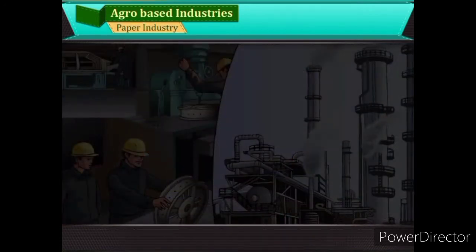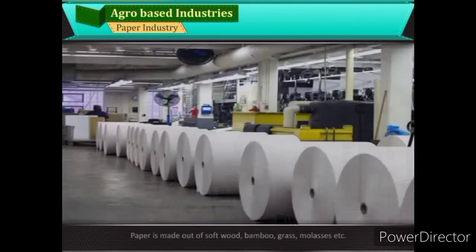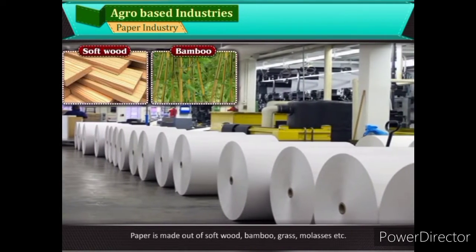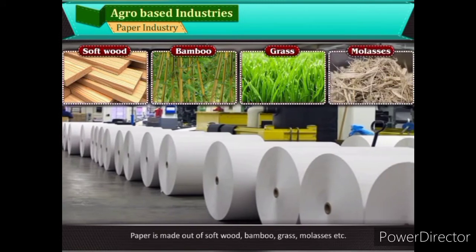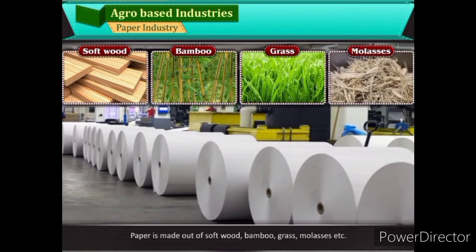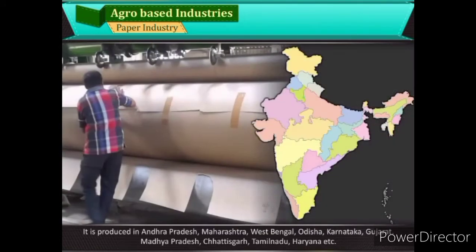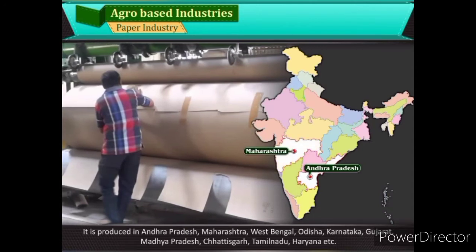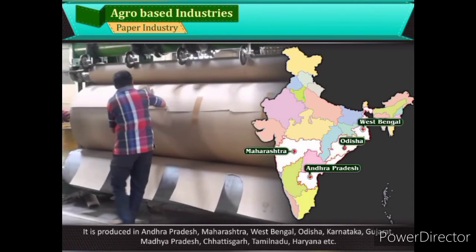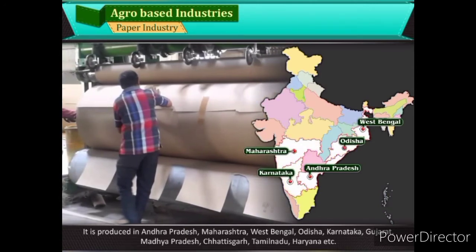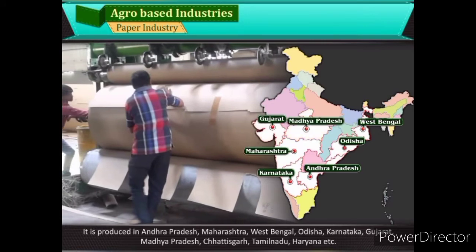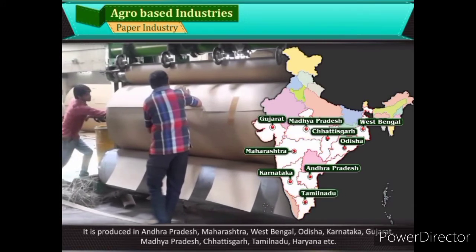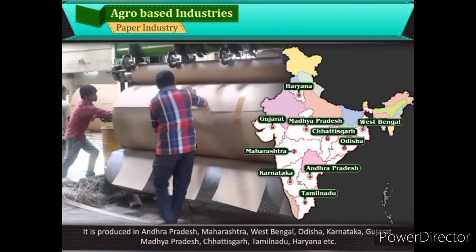Paper Industry: Paper is made out of soft wood, bamboo, grass, molasses, etc. It is produced in Andhra Pradesh, Maharashtra, West Bengal, Odisha, Karnataka, Gujarat, Madhya Pradesh, Chhattisgarh, Tamil Nadu, Haryana, etc.